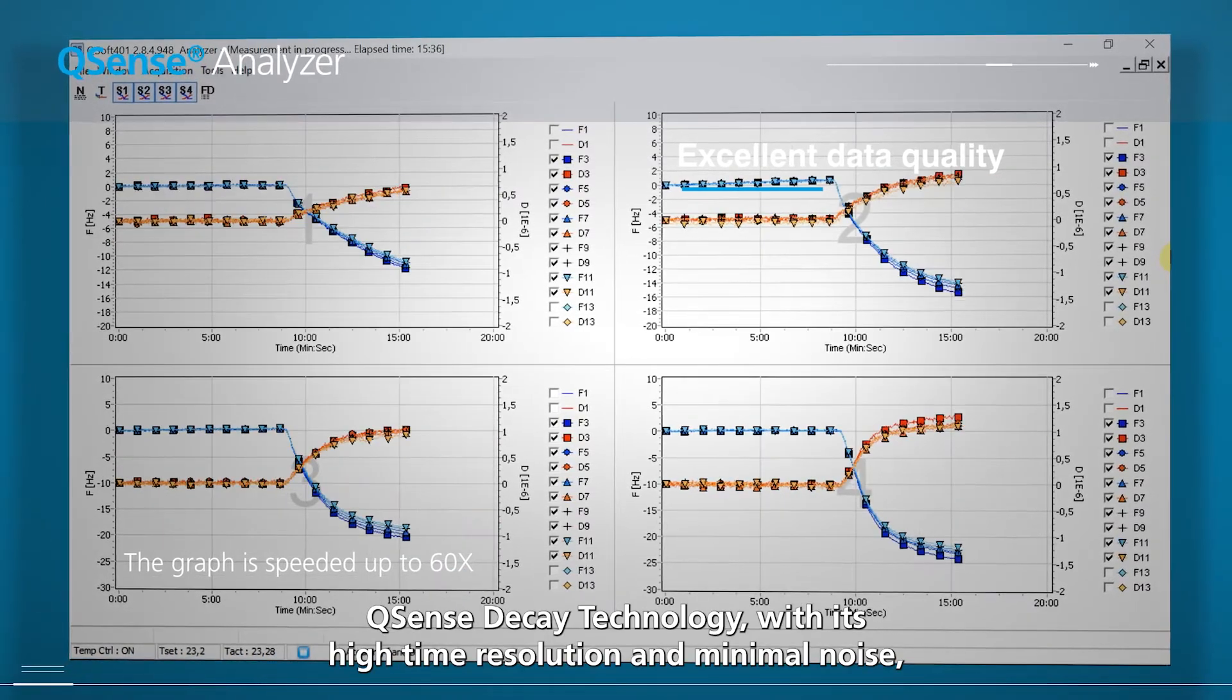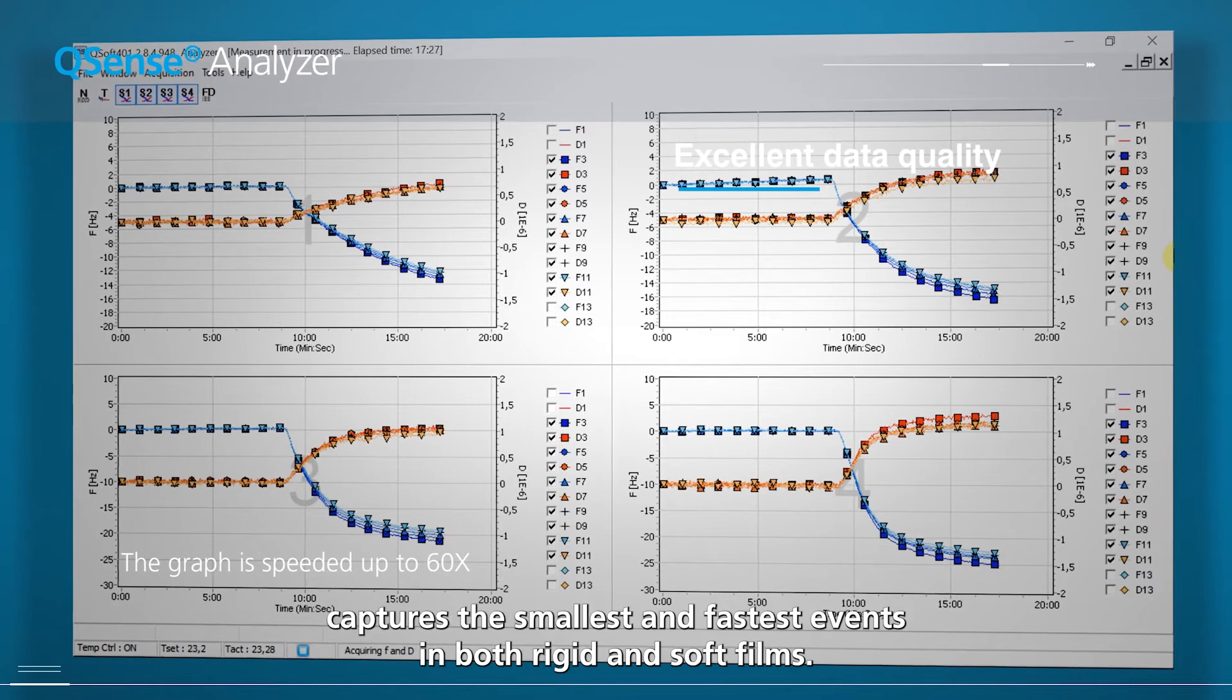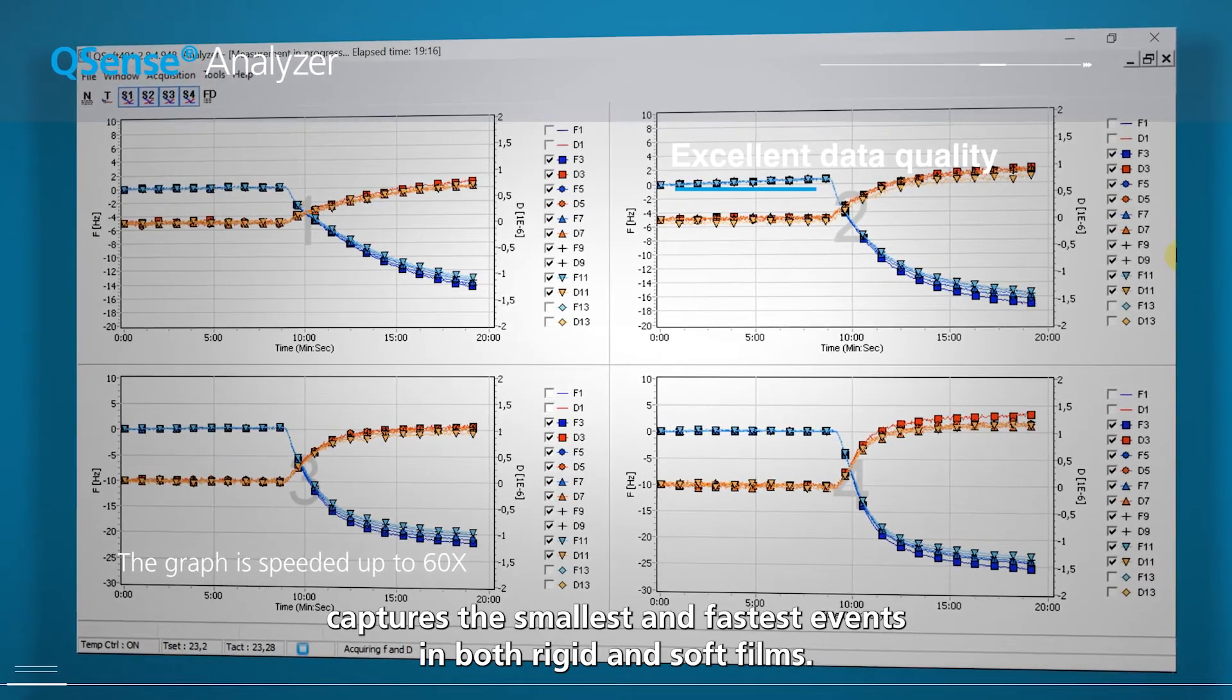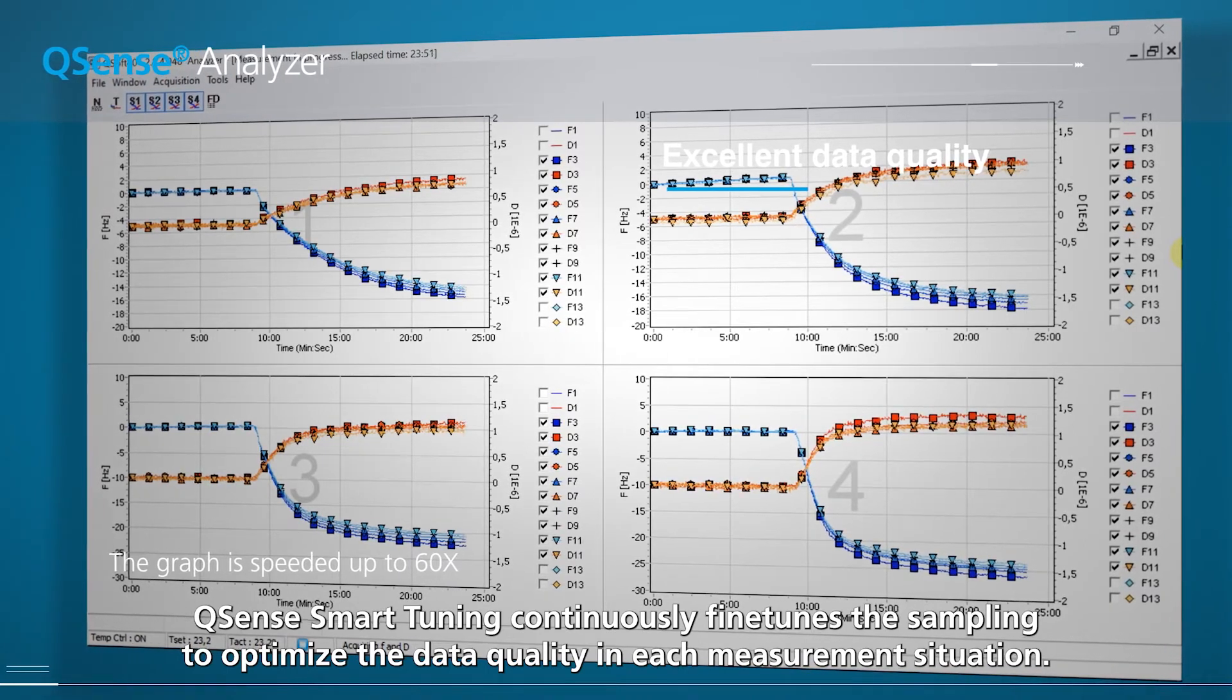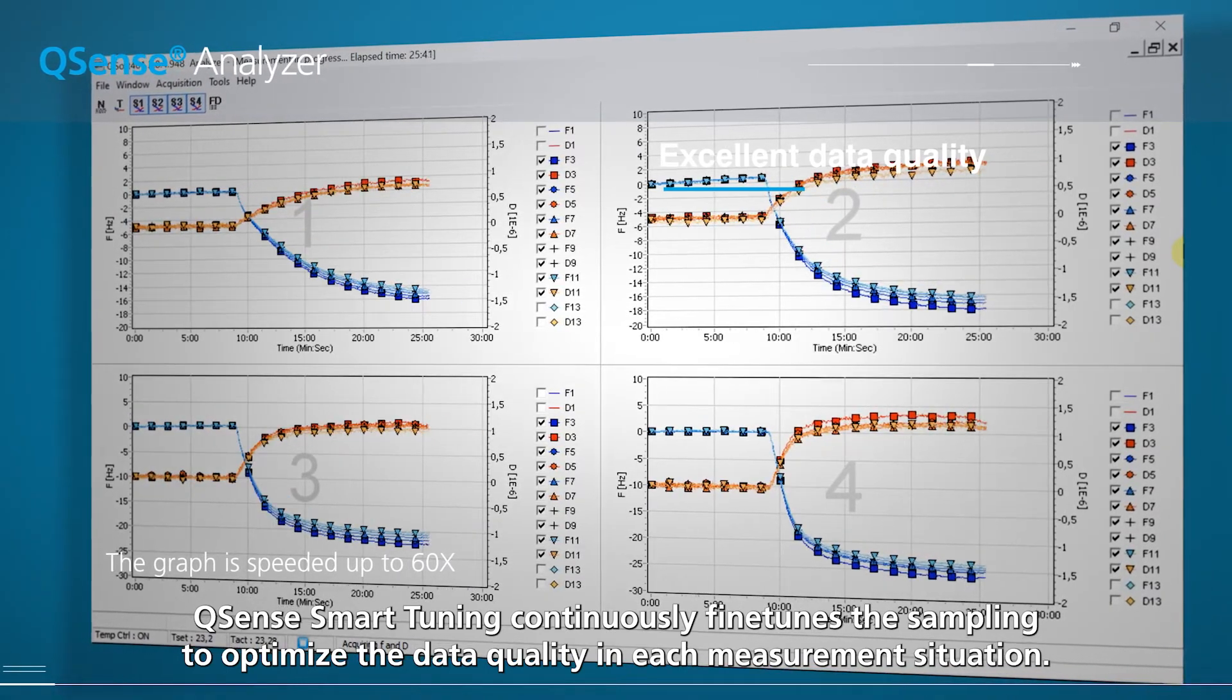QSense DK technology, with its high time resolution and minimal noise, captures the smallest and fastest events in both rigid and soft films. QSense Smart Tuning continuously fine-tunes the sampling to optimize the data quality in each measurement situation.